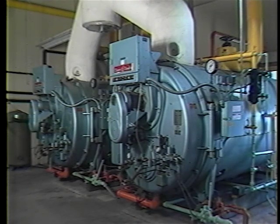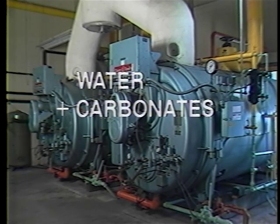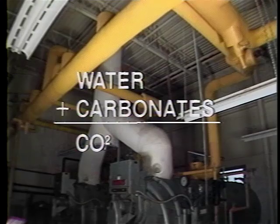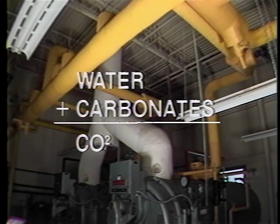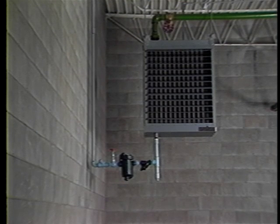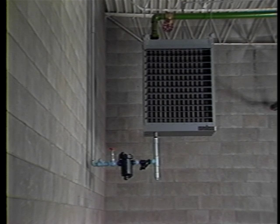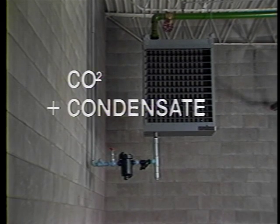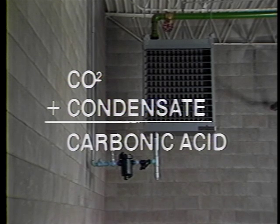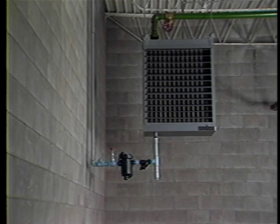Corrosion due to accumulations of condensate starts with the presence of carbonates in the boiler feed water. These carbonates dissolve and release carbon dioxide gas, which then travels with the steam through the distribution piping. If the condensate collects in the heat exchanger and is allowed to cool below the saturation temperature of the steam, these gases will combine with the water, forming carbonic acid. This acid is extremely corrosive and will eventually eat through the tubes in the heater's core, necessitating repair or replacement.